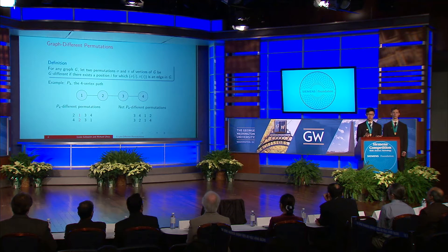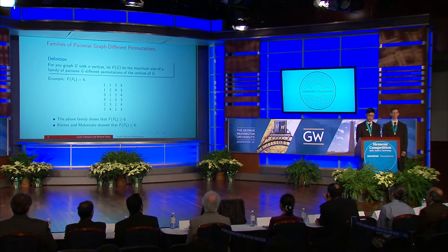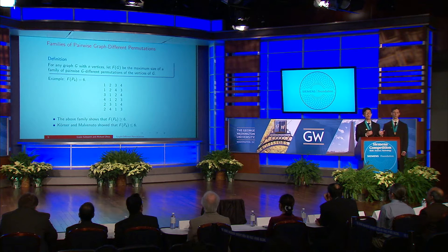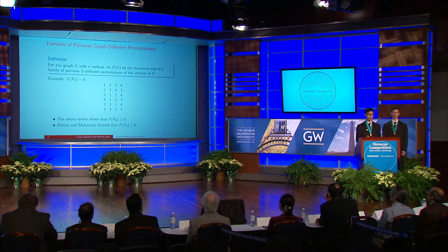On the other hand, the two permutations of P4 shown on the right-hand side of the screen are not P4-different, because at no position are the corresponding elements in each permutation connected in P4. Analogously to pairwise distinguishable symbols, we now shift attention to families of pairwise graph-different permutations. For a graph G with n vertices, we let F of G denote the maximum size of a family of pairwise G-different permutations. For instance, considering P4 again, we've constructed a family of six permutations with the property that any two are P4-different. This shows F of P4 is at least six, and combined with a result by Corner and Malvinuto showing F of P4 is at most six, we conclude F of P4 equals six.